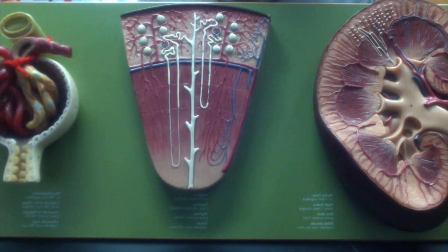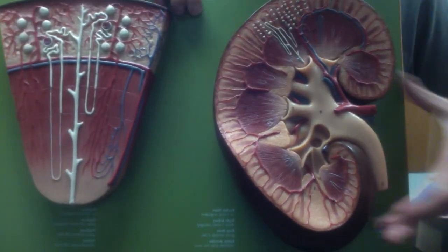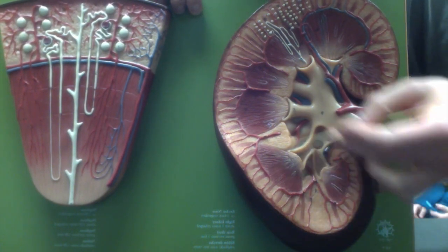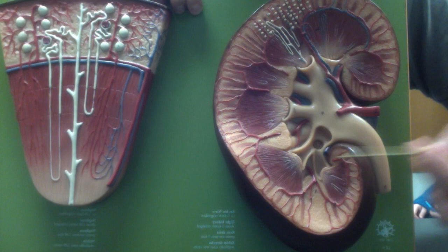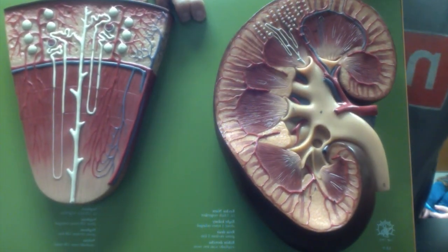All right, today we're going to be going over this kidney model. First, we'll start off with the whole kidney. On the outside you have the cortex, and towards the inside you have the medulla, just like the other organs we've already learned.